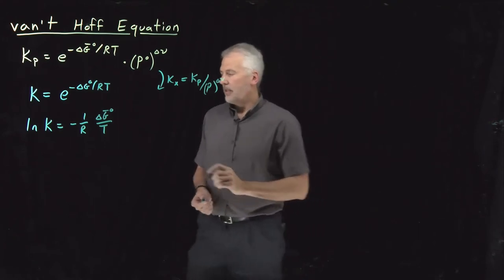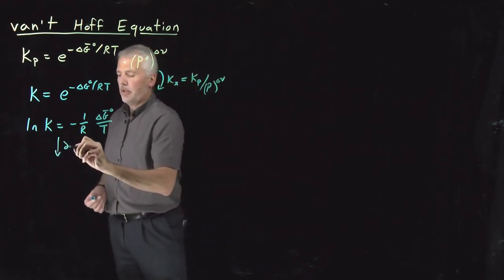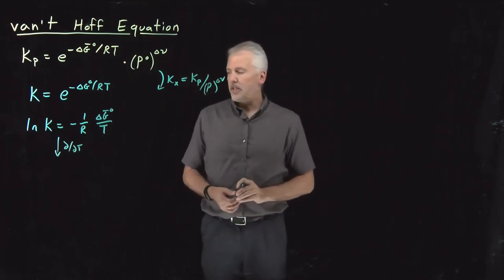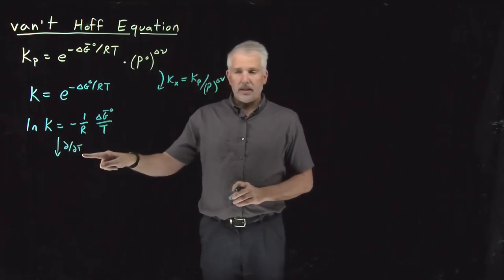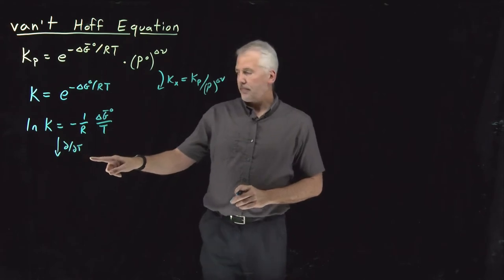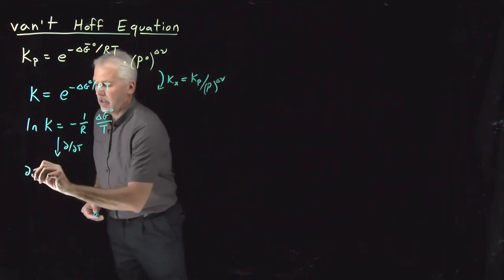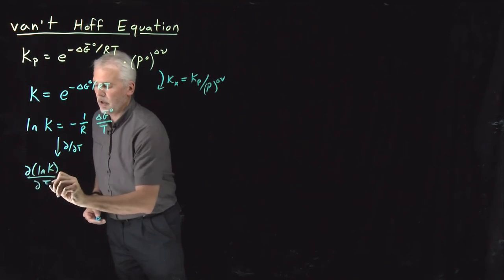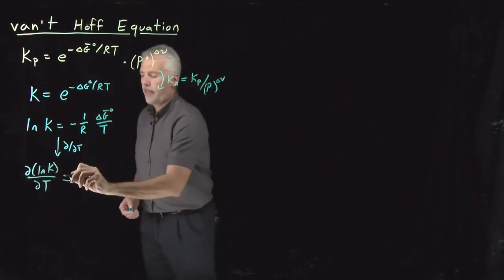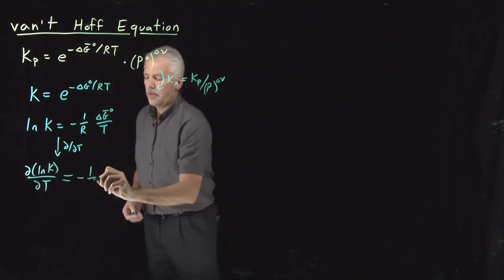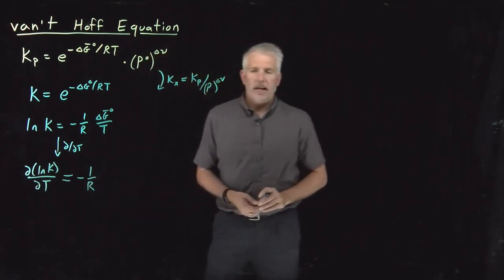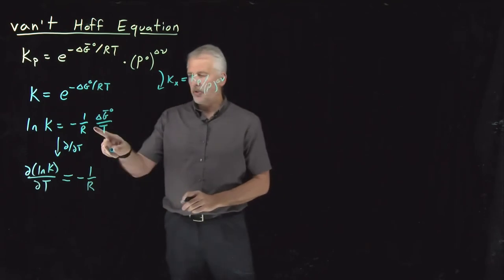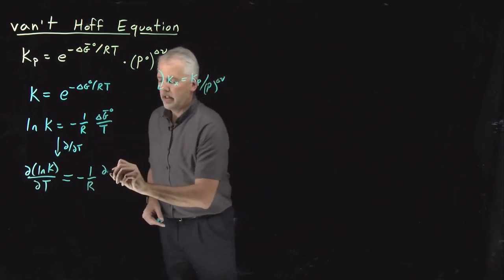Because next, what I want to do to talk about how those quantities change when I change the temperature is I'll take the temperature derivative. So on the left, I'm taking the temperature derivative of log K. On the right, the reason I pulled the 1 over R out separately is it doesn't depend on temperature. I've got 1 over R, and then I need the temperature derivative of this quantity, delta G over T.